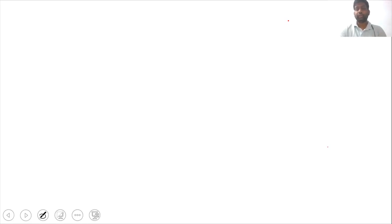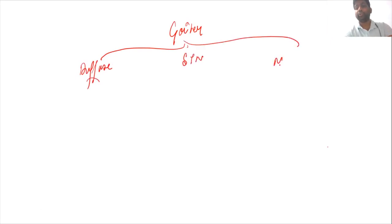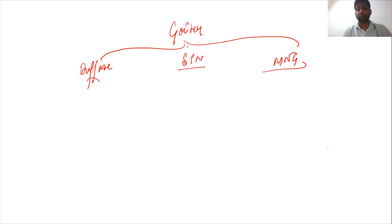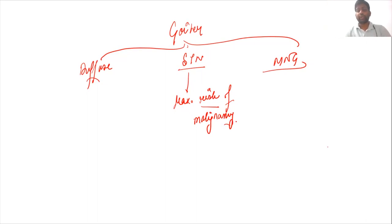A brief summary: when a patient comes to us with a goiter — any visible or palpable swelling — there are three possibilities: a diffuse goiter, a solitary thyroid nodule, or a multi-nodular goiter. In a diffuse goiter, always rule out physiological goiter first, as you just wait and watch. The maximum risk of malignancy is associated with the solitary thyroid nodule; for solitary nodules, multi-nodular goiter, and diffuse goiters we proceed with the quadruple assessment.